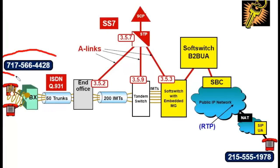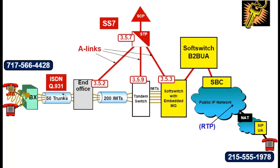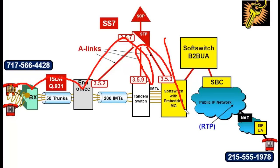Our A-party, which is originating from 717-566-4428, is calling 215-555-1978. Ultimately, the call setup is going to be hopping across this path, where this portion, at least that far, is going to be public switch telephone network.